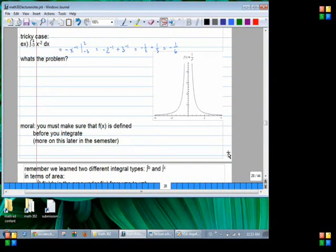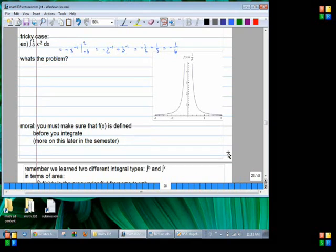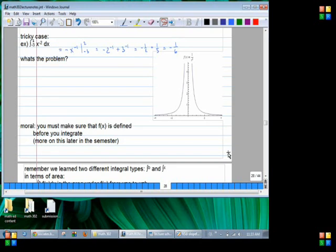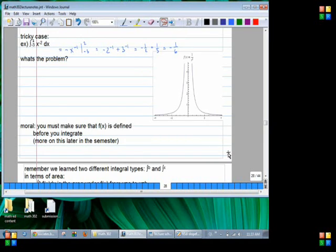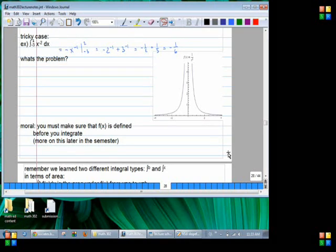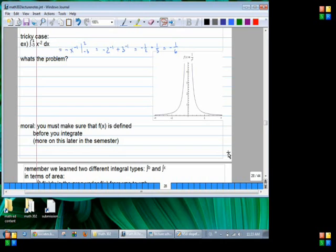All right, so we've talked about two different types of integrals. We've talked about integrating from A to B, which gives us a definite area, an actual number. And then we also talked about integrating from A to X. Now when you solve a problem involving integrating up to X, what does your answer look like? Your answer looks like a function, because it's an expression with an X in it.